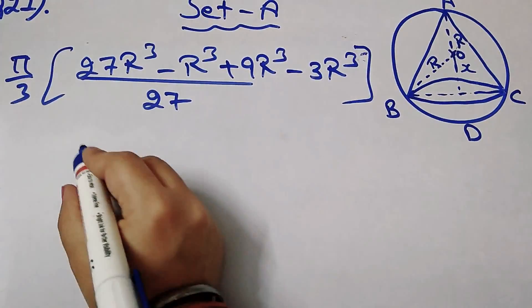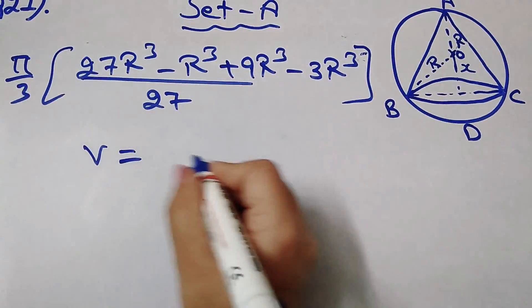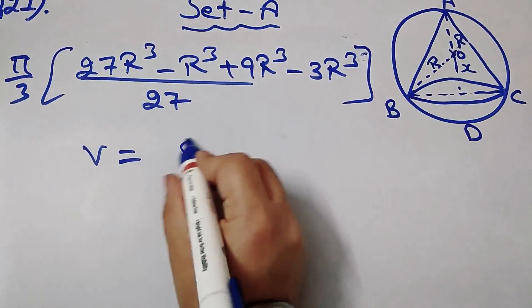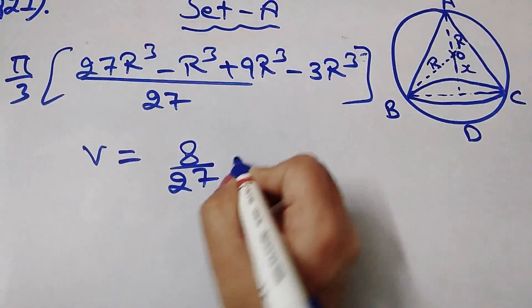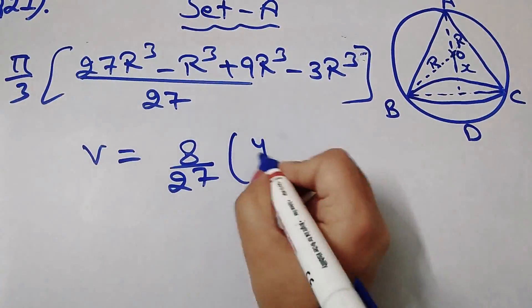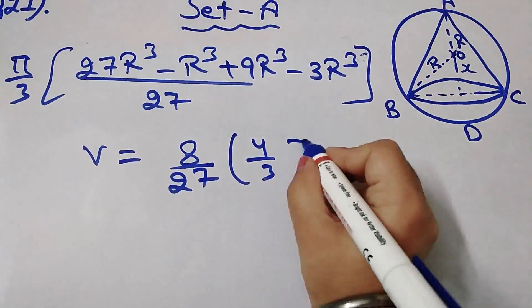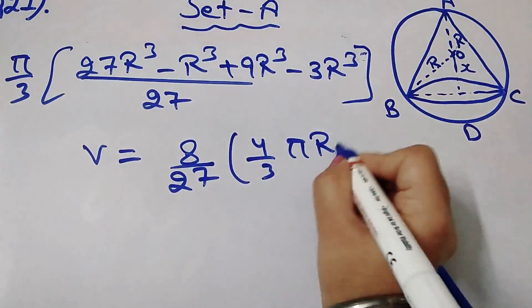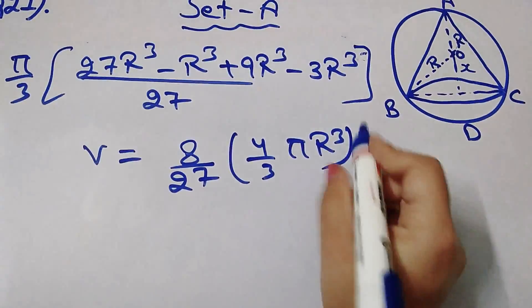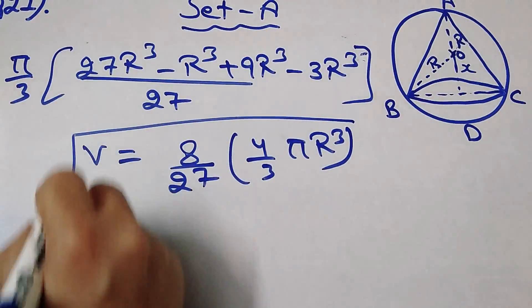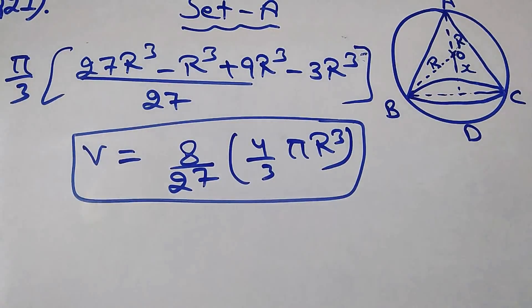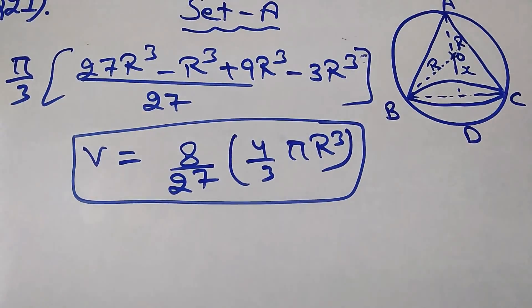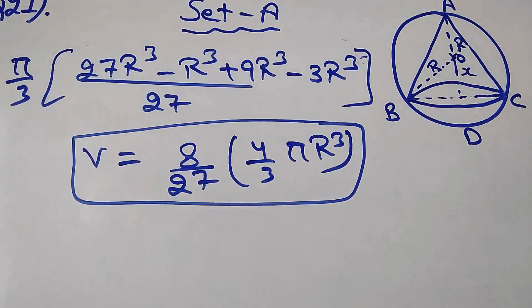On solving this, V equals (8/27) × (4/3)πR³. Hence proved. Thank you guys for watching this video. Bye-bye.